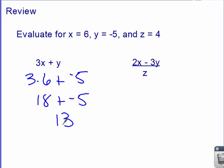This second one is a little bit tougher because it's got a big division bar. This one says 2 times the value of x minus 3 times the value of y, get an answer to that, and then divide it by the value of z. So we've got 2 times our x value is 6 minus 3 times our y value is negative 5, and I'm going to divide that by 4.